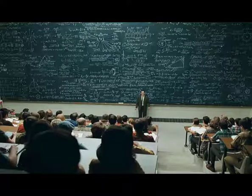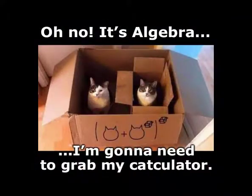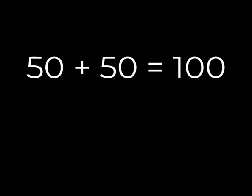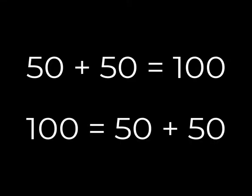The other piece of understanding you require to tackle controls programming is some basic algebra skills. In school we would write an equation like this: 50 plus 50 equals 100. But could we not also write it this way? 100 equals 50 plus 50. They are basically the same thing, correct?